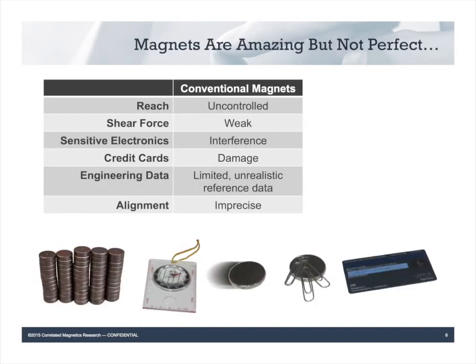Now let's get into the magnets. Magnets are amazing, but they're not perfect. There are a lot of common problems in product design using magnets. They're not as strong as expected much of the time. A lot of the available data is based on unrealistic test cases that don't apply to your product. Magnets can slam together from a distance, tend to pick up stray objects, can damage credit cards and interfere with sensitive devices. By themselves, they don't provide a lot of shear force resistance and they don't really align very well.